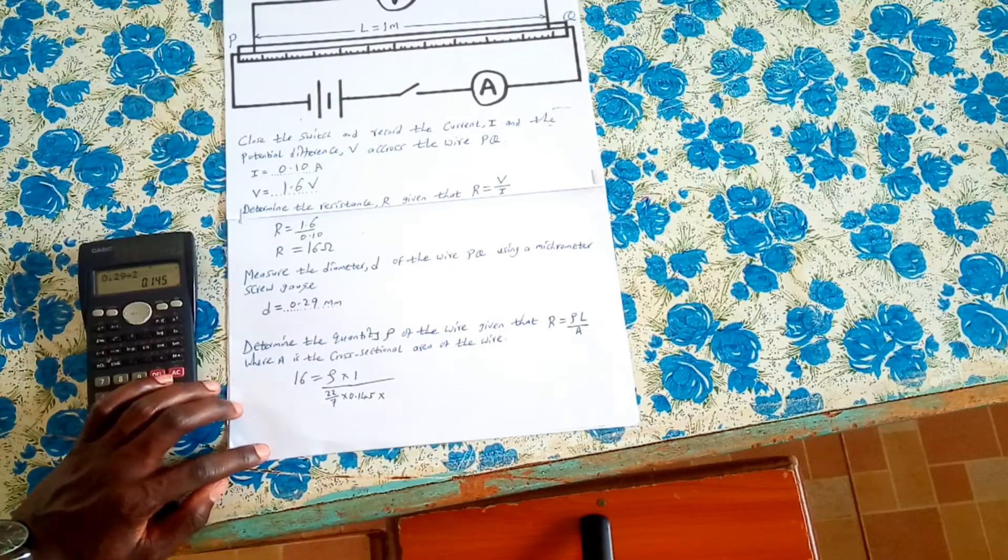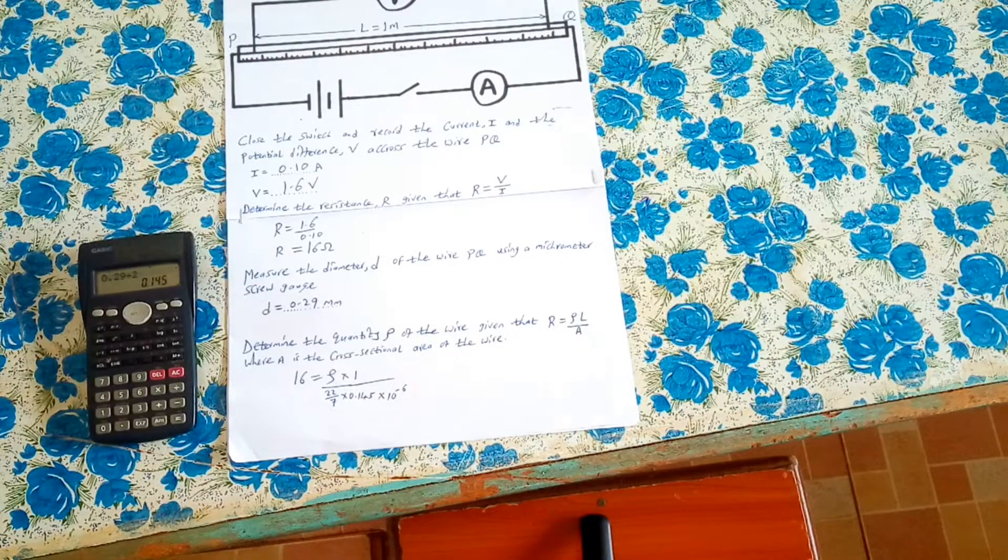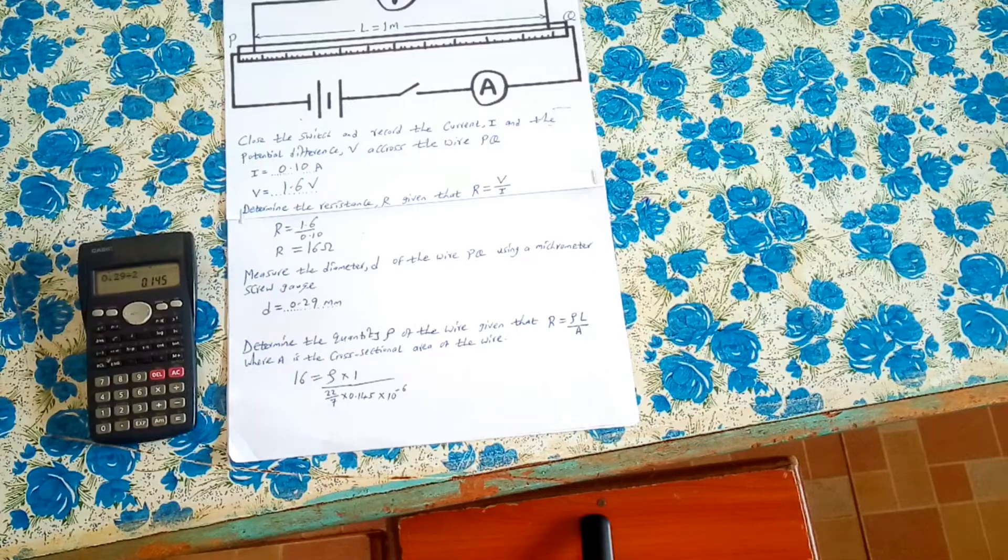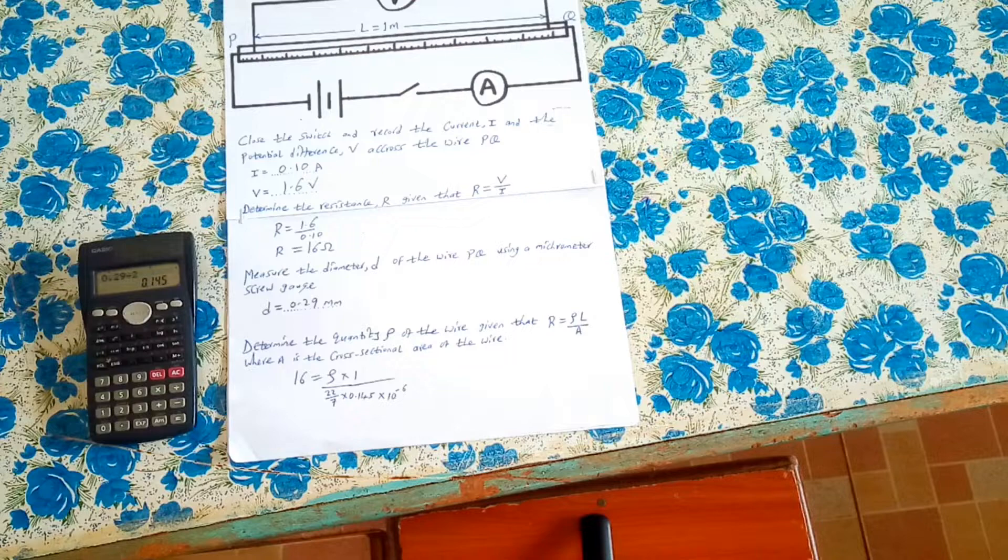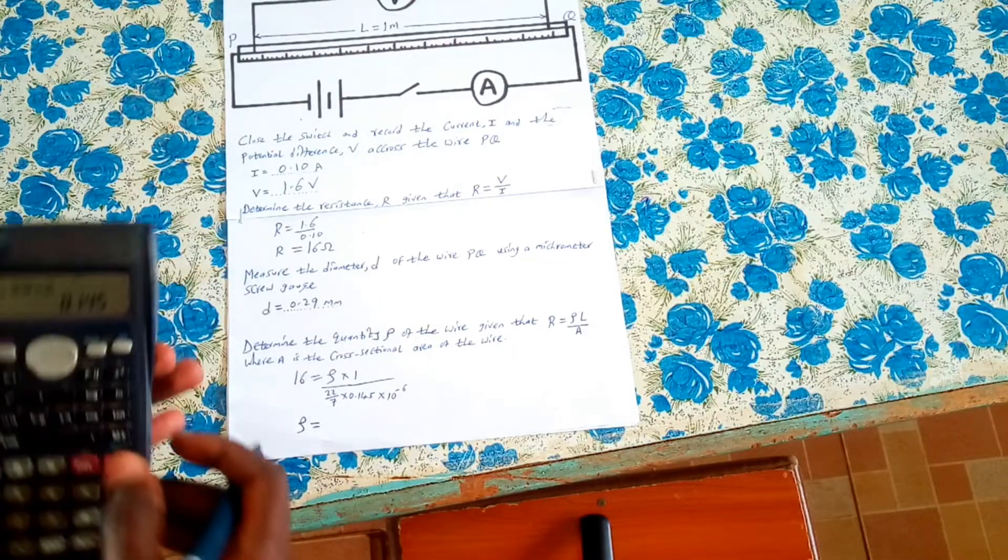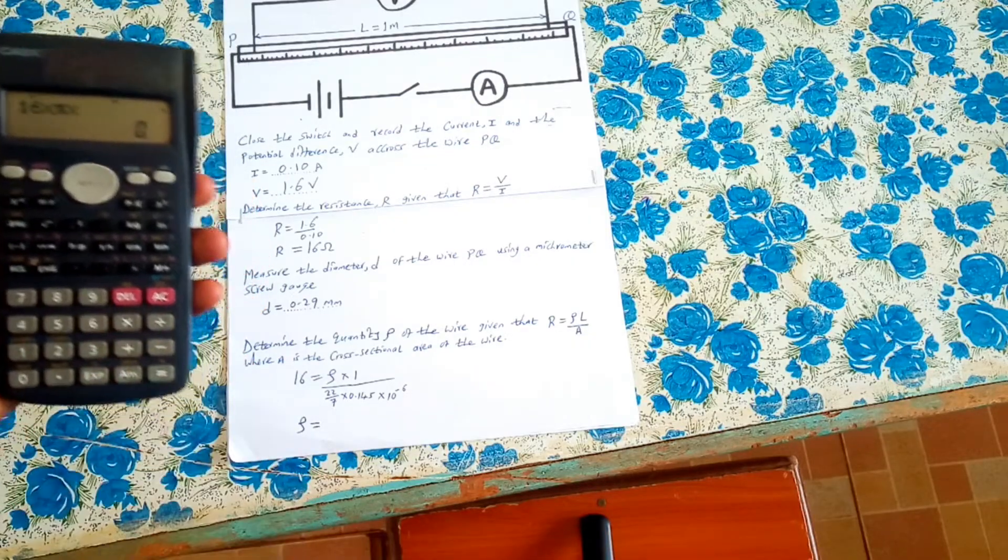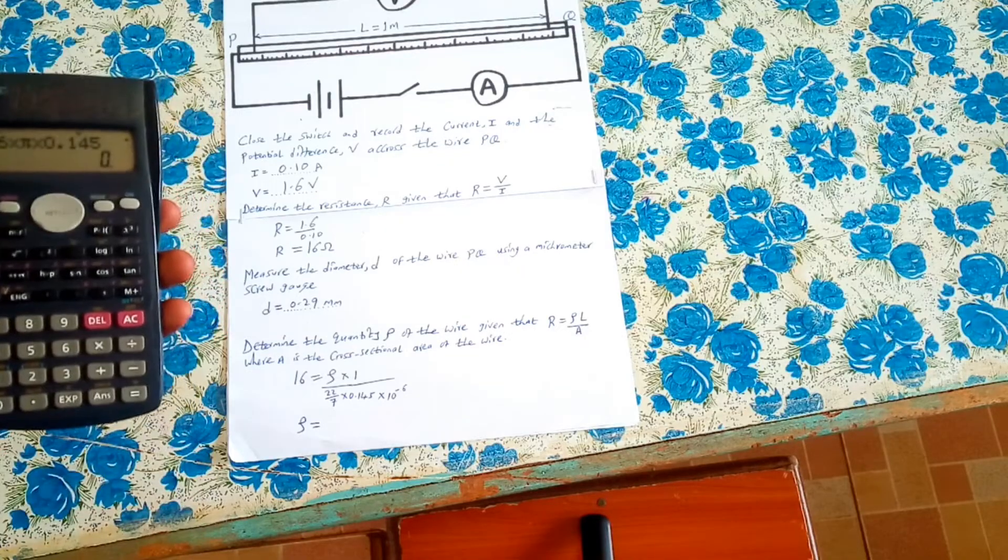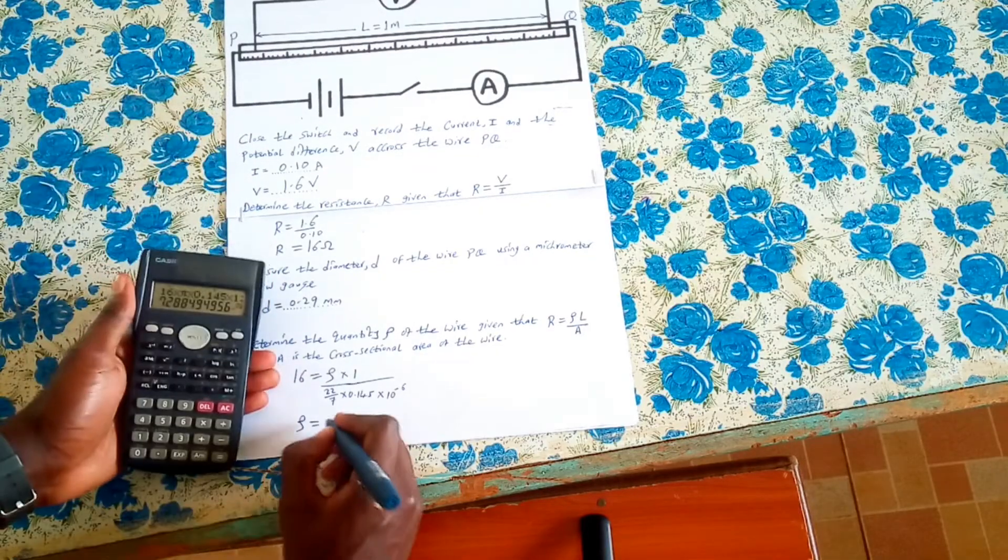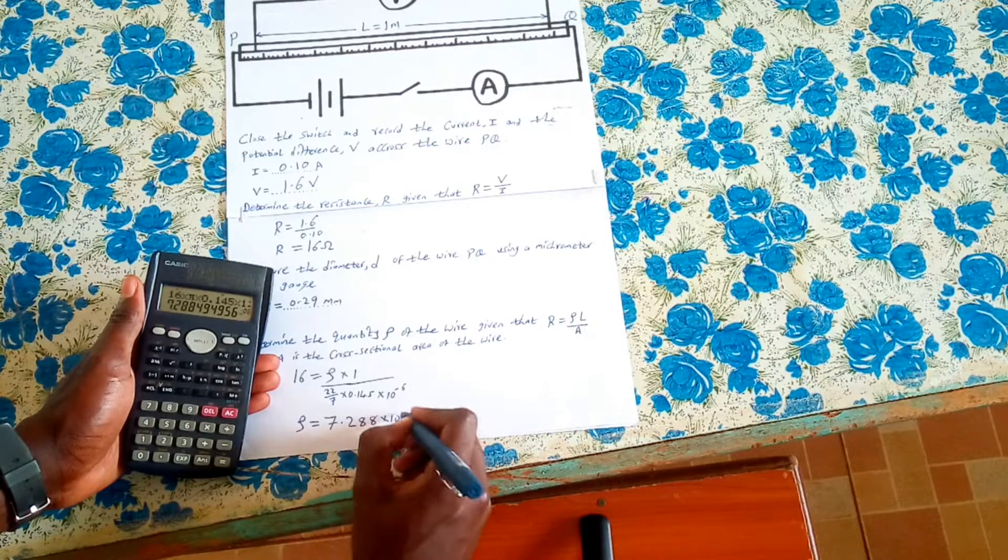Because this one will be millimeter squared, it will be times 10 raised to negative 6, because we are converting millimeter squared into meter squared. So resistivity will be 16 times pi times 0.145 squared times 10 raised to power negative 6. And this gives us 7.288 times 10 raised to negative 6.